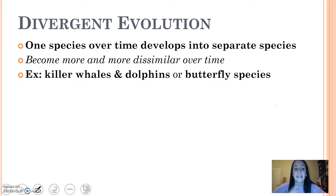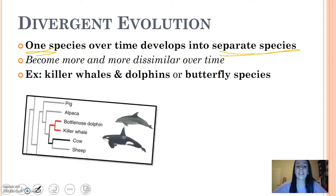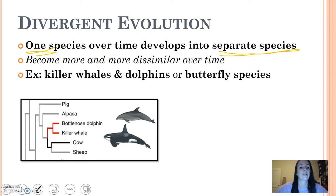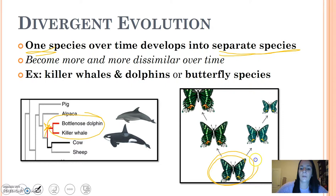Divergent evolution is the opposite — it's when one species develops into two or more separate species, becoming more and more dissimilar over time, eventually reaching the point where they can't reproduce with each other. An example is killer whales and dolphins diverging from a common ancestor, and also butterfly species where what started as one butterfly eventually diverged into two totally separate species.